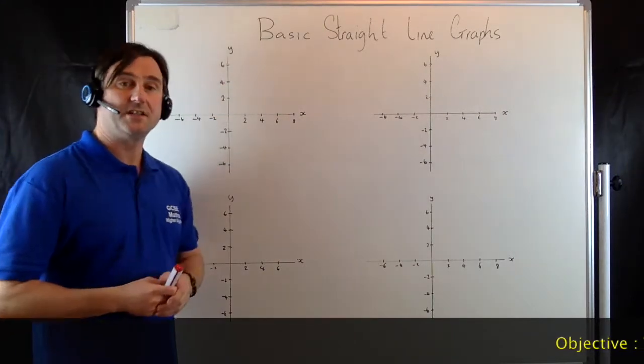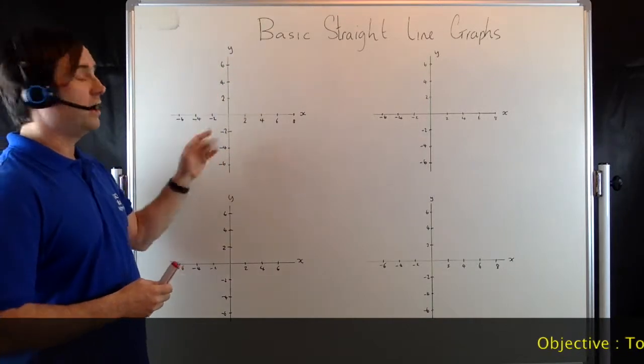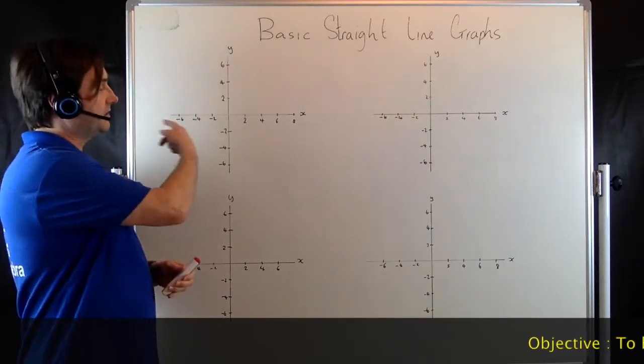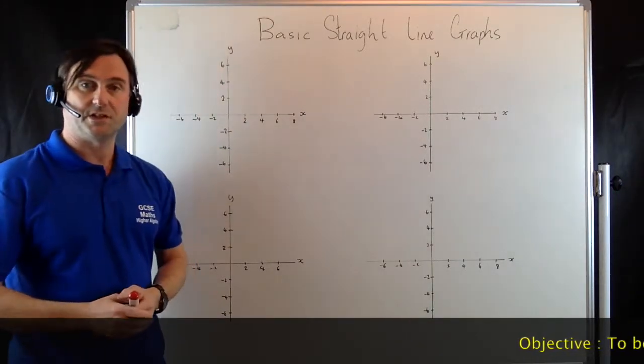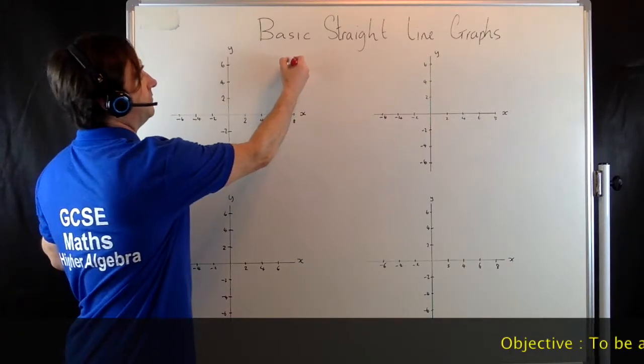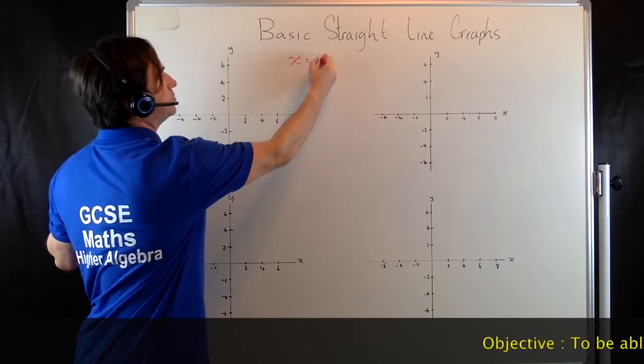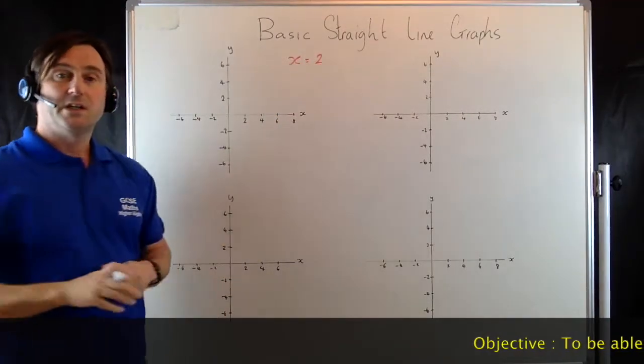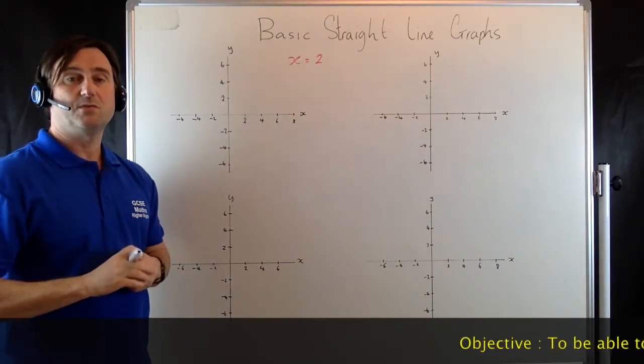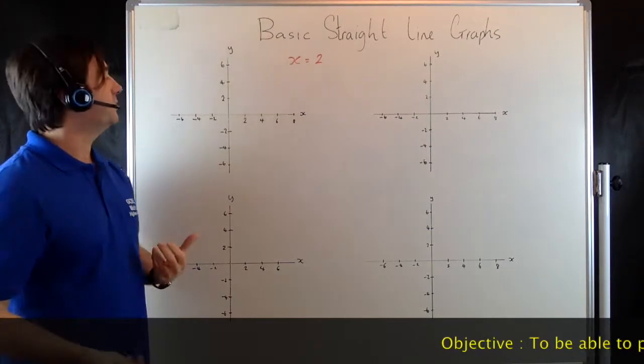Here we've got a set of axes. You should be aware that the y axis is the one that goes upwards vertically, the x axis always goes horizontally. And what I'm going to look at drawing here is just a simple graph. We're going to draw the graph of x equals 2. Now what that means is x is always going to equal 2 on this graph, it doesn't matter what y equals, x will always equal 2.